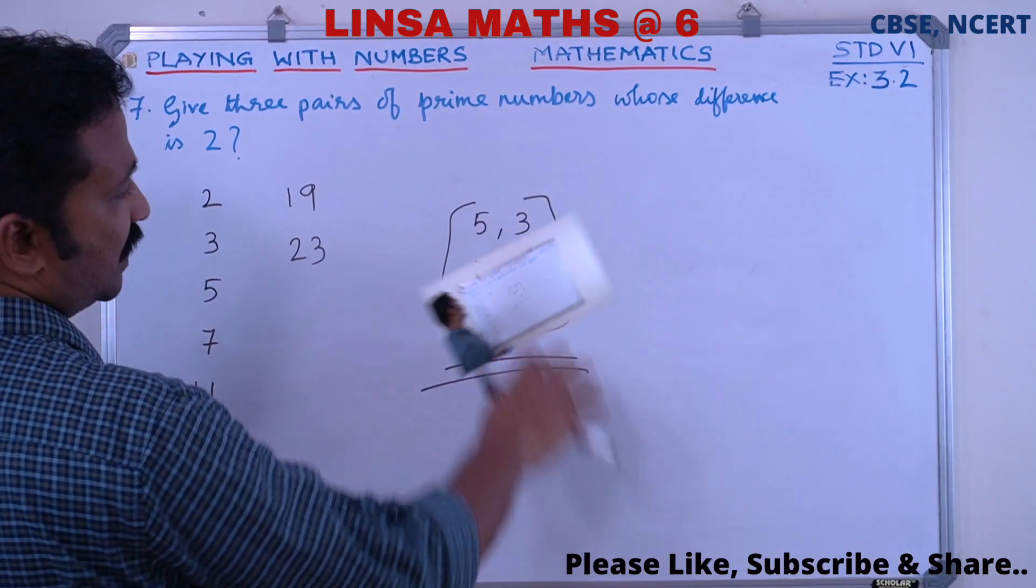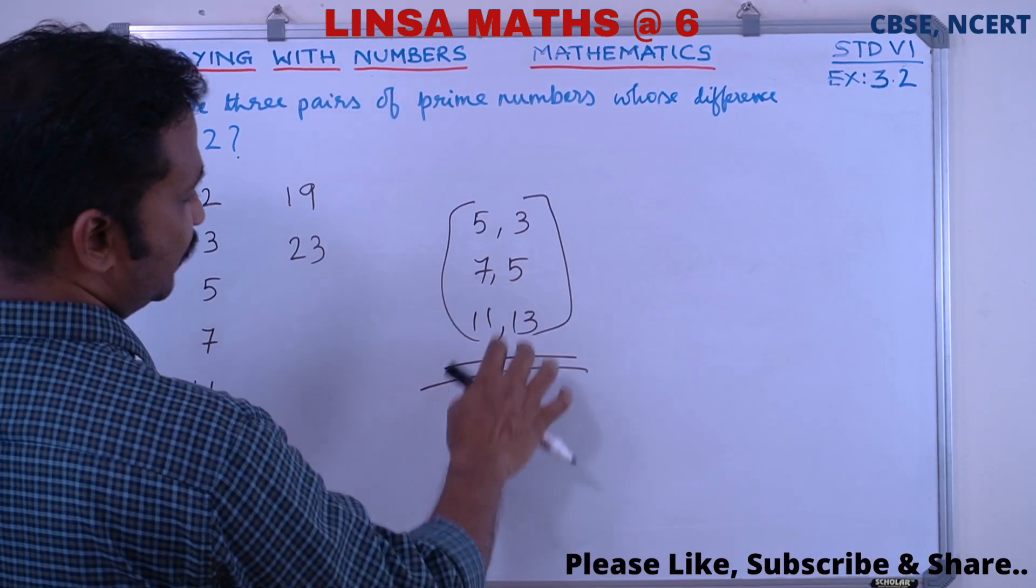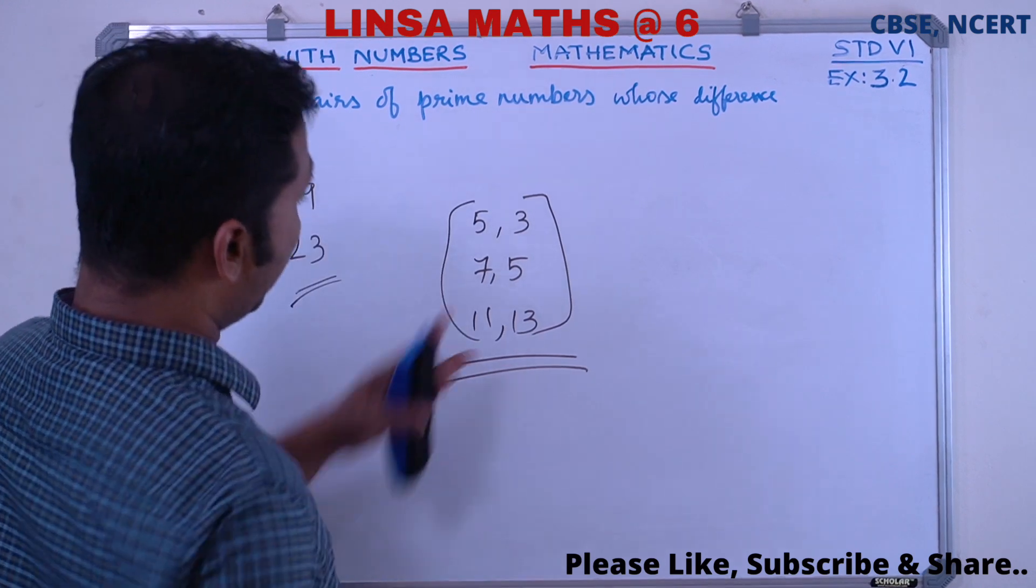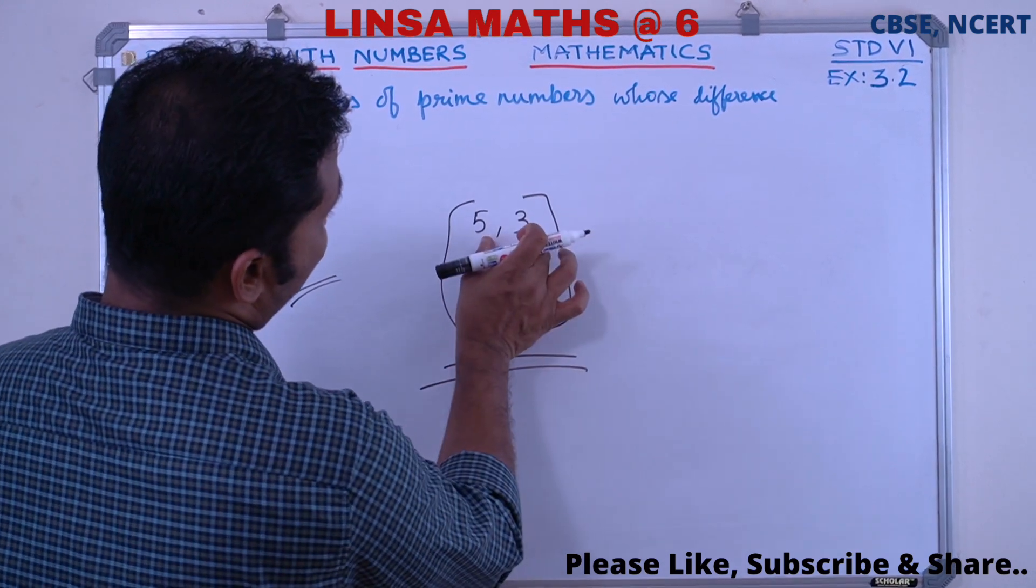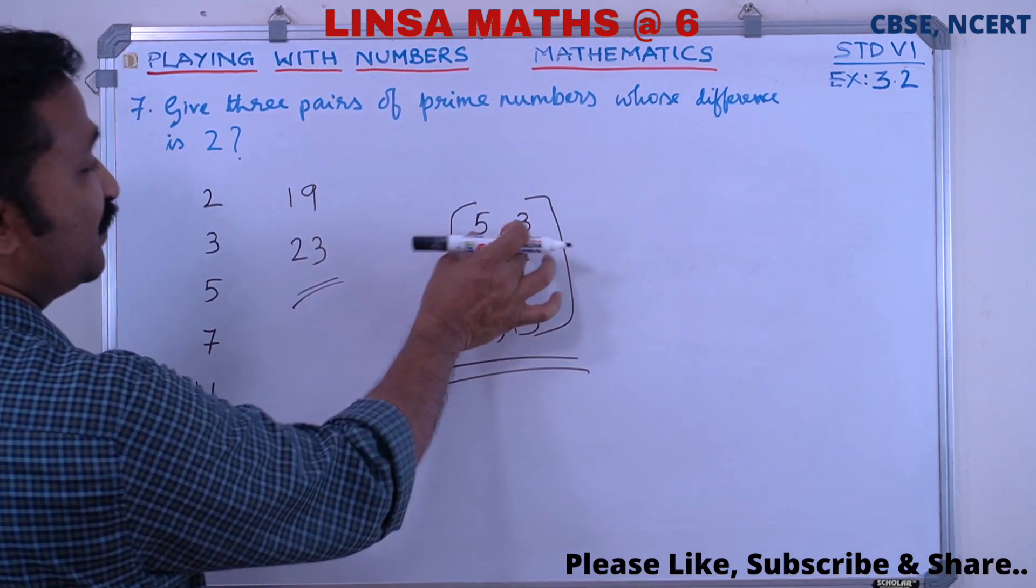So the pairs with difference 2 are: 3 and 5, 5 and 7, 11 and 13. These are the prime numbers whose difference is 2.